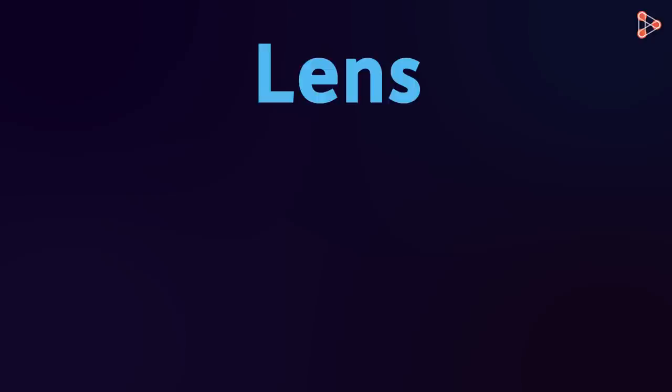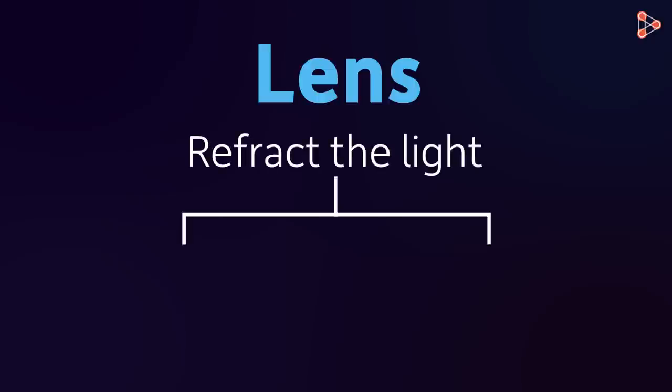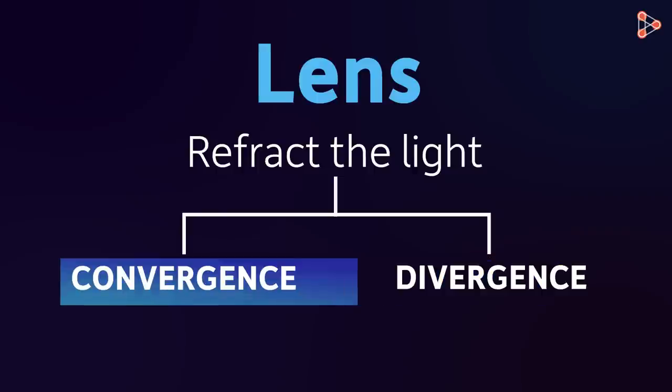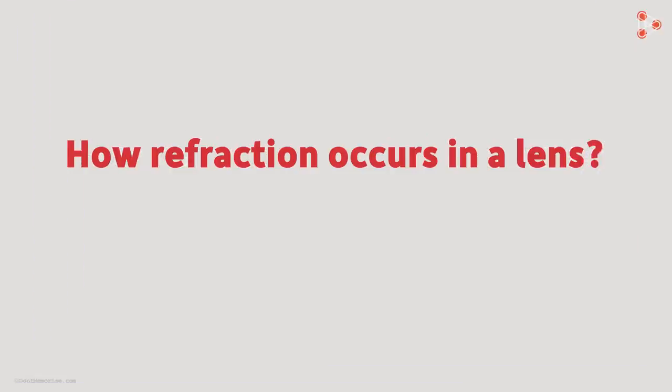Well, the main purpose of the lens is to refract the light in some pattern. There are basically two patterns: convergence and divergence. But before studying these two patterns, we first need to understand how the light is refracted by a lens.